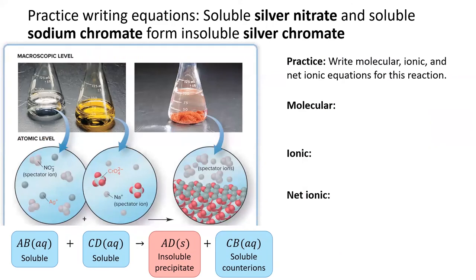Okay, time to practice it yourself. Try writing the three kinds of reaction equation for the reaction between silver nitrate and sodium chromate in which insoluble silver chromate precipitates.